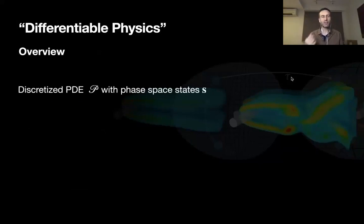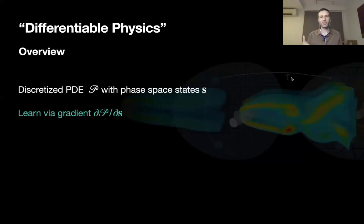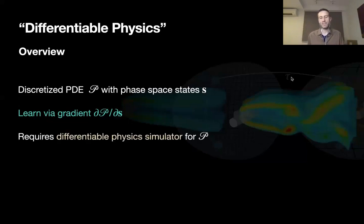Talking about differentiable physics simulations: we typically have some PDE called P that captures the physical model we're interested in, with some state S over time on which this PDE works. The key quantity that is really useful — similar to classical joint optimization — is the gradient of this simulation with respect to state S. We'd like to know: for some change of state, how do we need to change the inputs to get that desired change? Not all simulators necessarily provide this, but if we have such a gradient, as I'll show later, this actually lets us combine the simulation very neatly with the deep learning process.